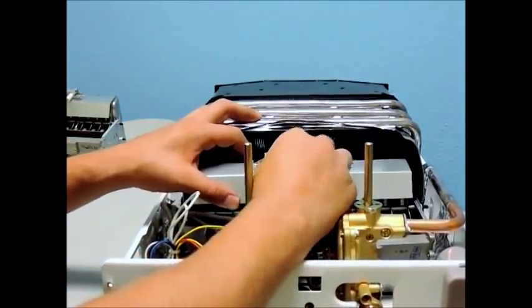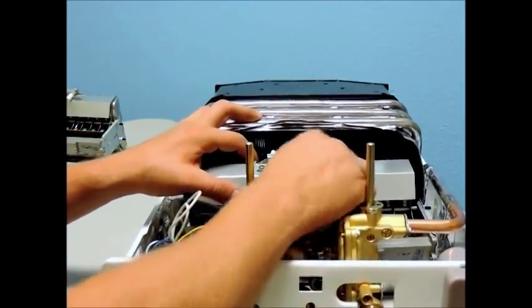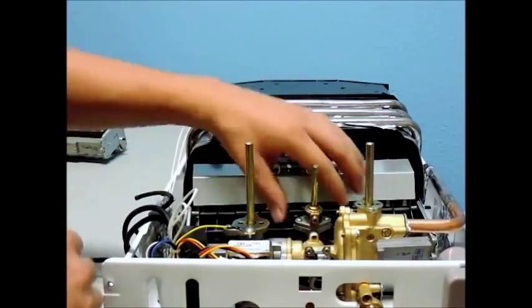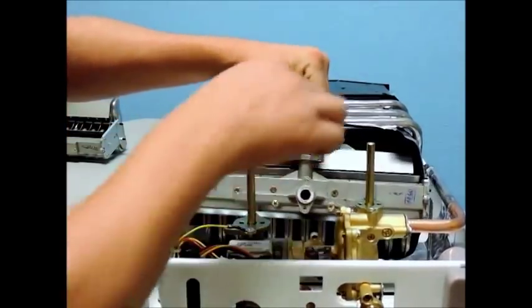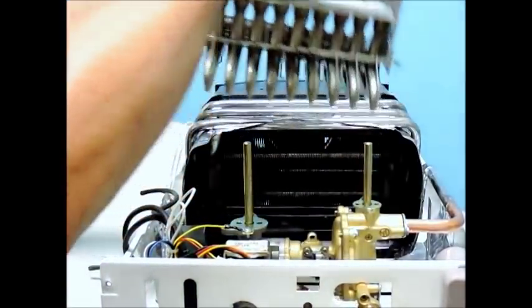Now you will want to remove the three black wires that connect the igniters and the thermocouple sensor to the ignition. This will allow you to completely remove the burner assembly from the unit.